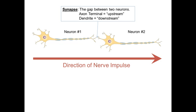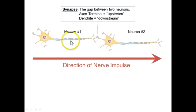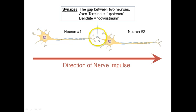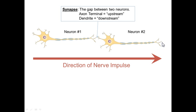The axon terminal is the upstream part of the gap, and the dendrite is the downstream part. On neuron number one, the message originally originated at the dendrite, traveled down to the cell body, then continued down through the axon to the axon terminal. At that point, it reached this tiny gap, and the message crossed the gap in the form of a chemical message, where it was picked up by neuron number two, becoming an electrical signal again, traveling down the dendrite towards the cell body, then down the axon to the axon terminal, and continues in that way.